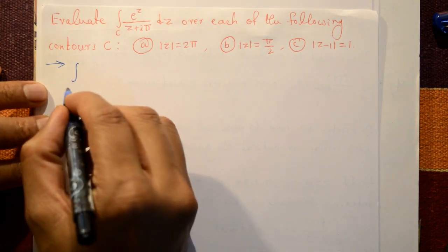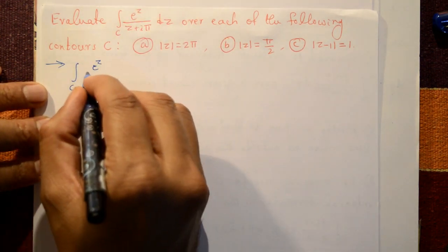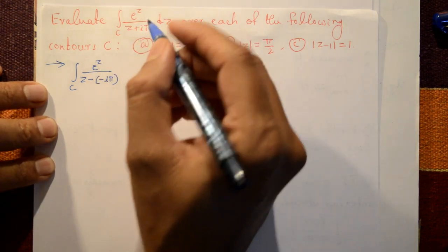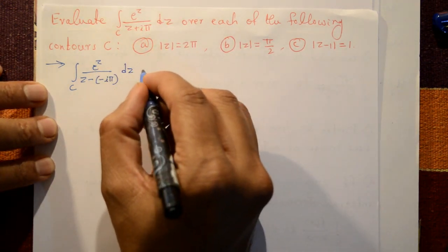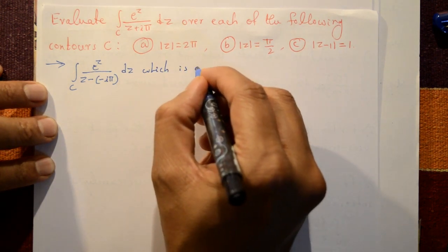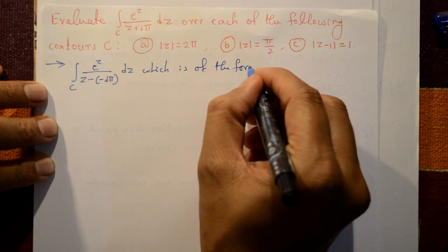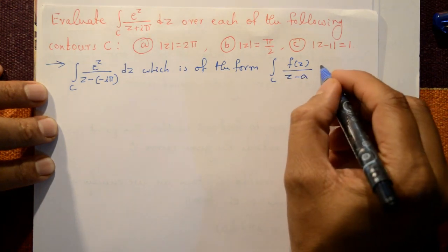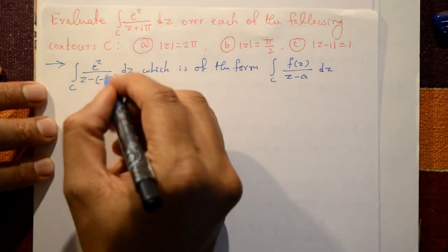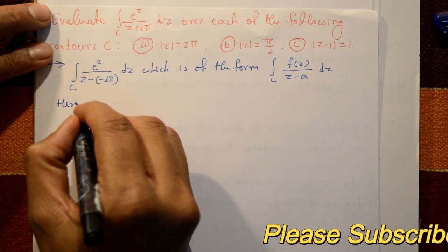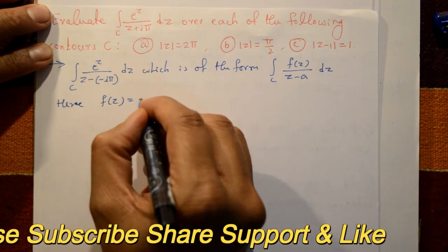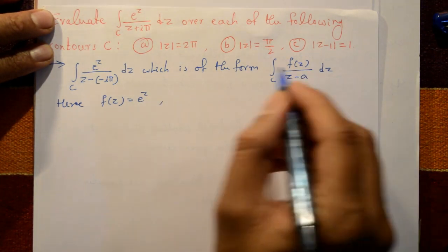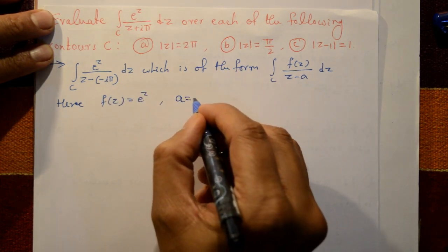The given integral is ∮ eᶻ/(z - (-iφ)) dz, i.e., eᶻ/(z + iφ). This matches the standard Cauchy form ∮ f(z)/(z - a) dz, where f(z) = eᶻ and a = -iφ.